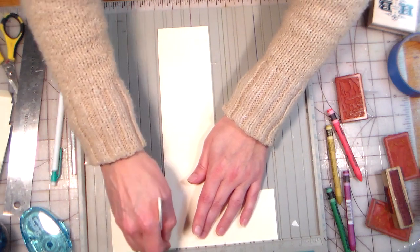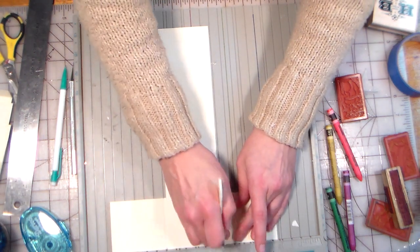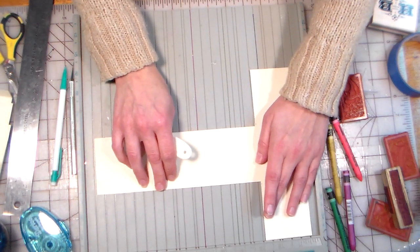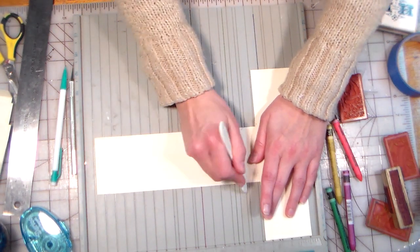so I'm using my score pal because I prefer to use my score pal when I'm scoring, you could use like a butter knife and a ruler if you didn't have a score pal or any other scoring board would be fine, and then you just score from point to point,